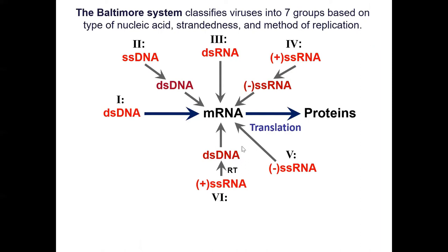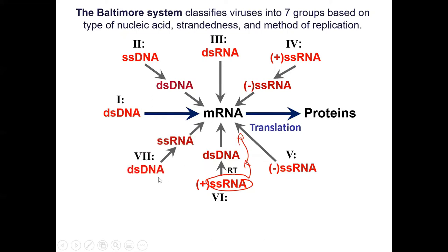There are also retroviruses - this is like HIV. This is interesting because we start off with RNA, then we go to DNA, and then we go back to RNA. It's called retro because it's backwards. And there are other double-stranded DNA viruses that for some reason convert to single-stranded RNA first - not sure why they do that, but it works for them.